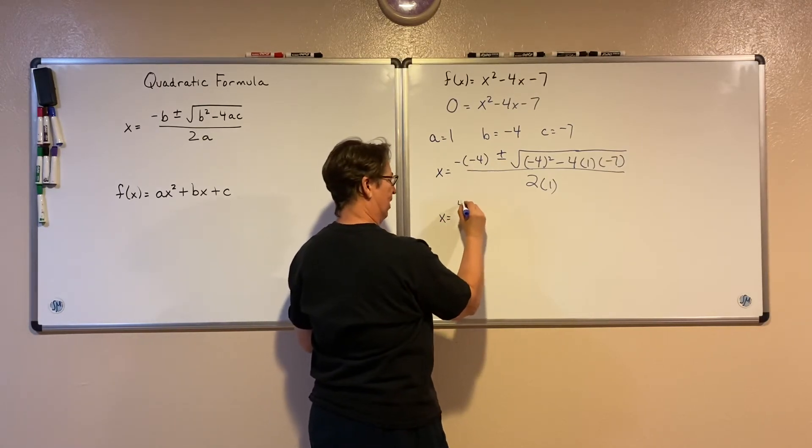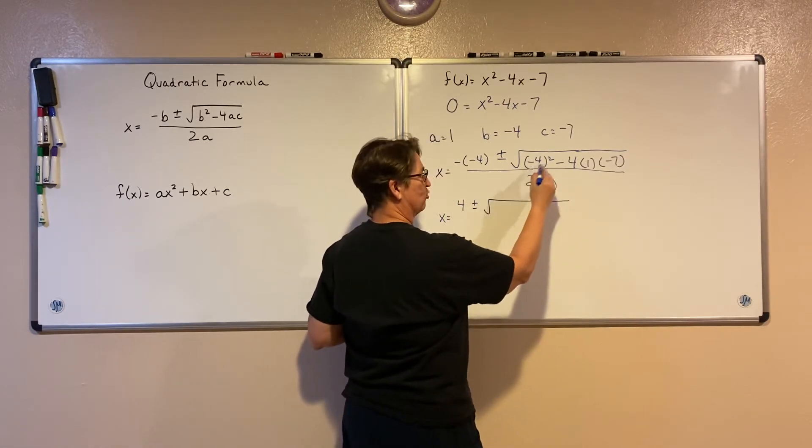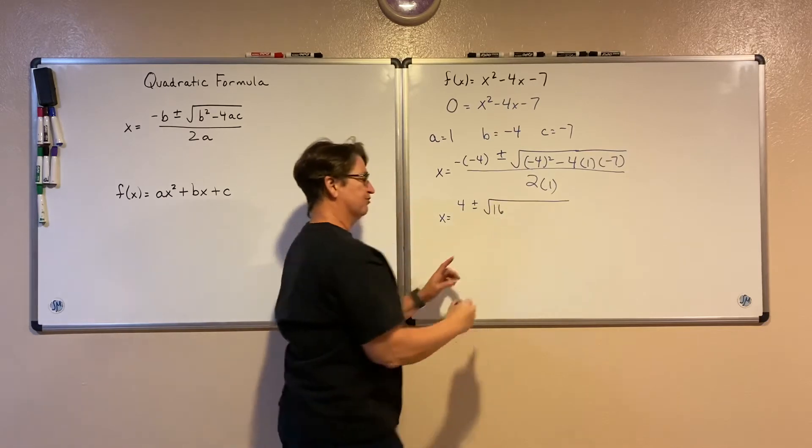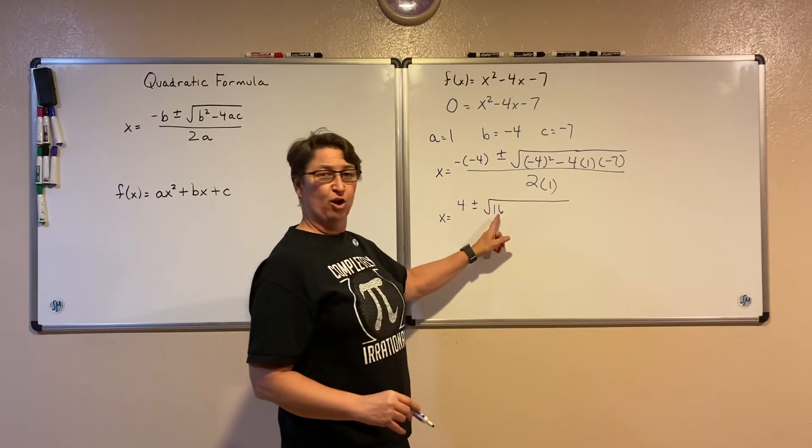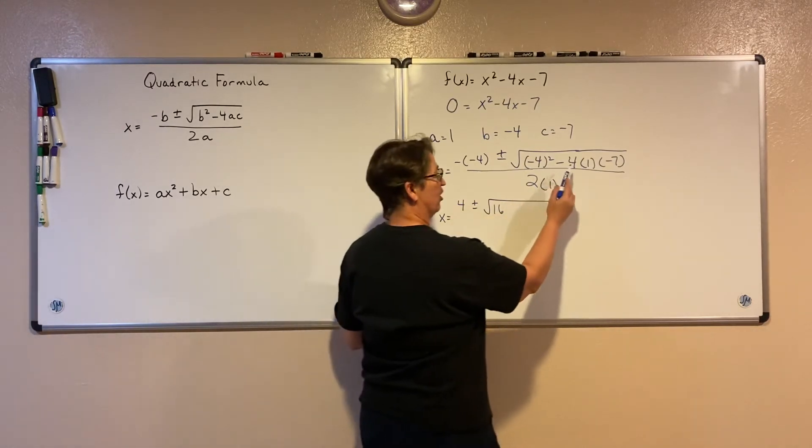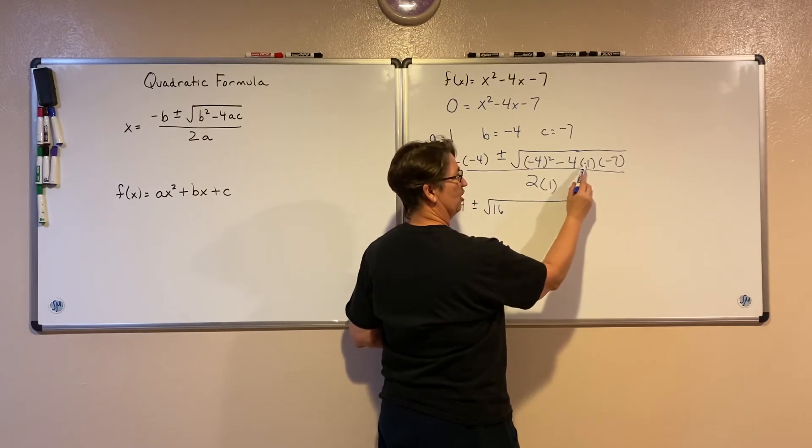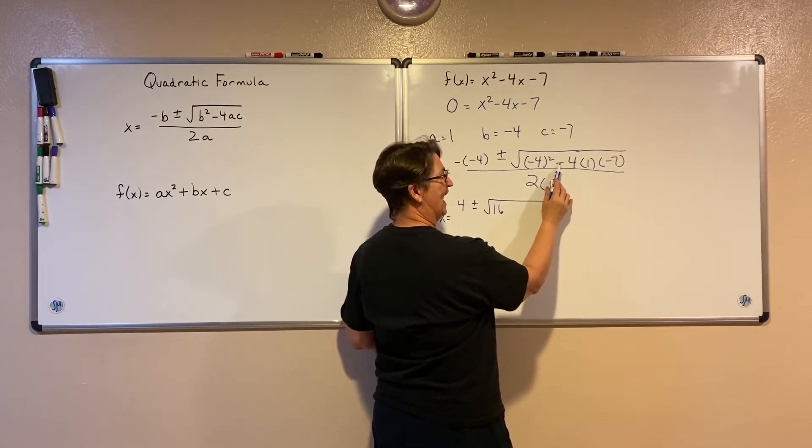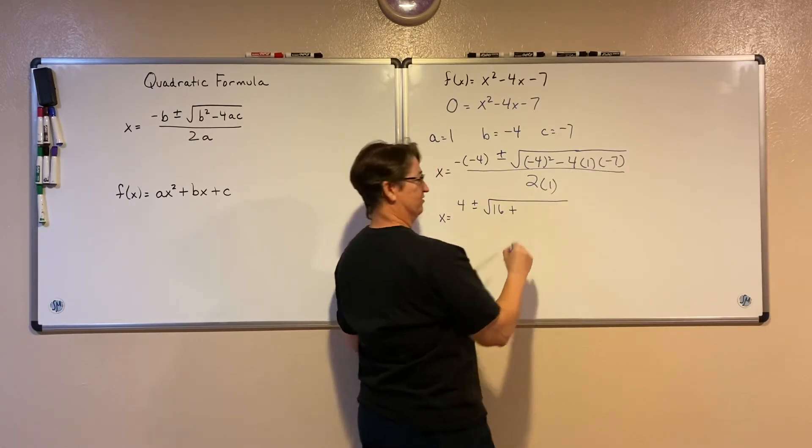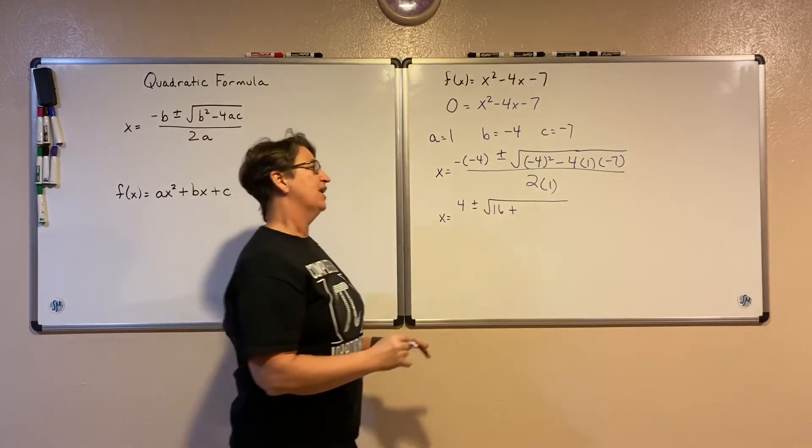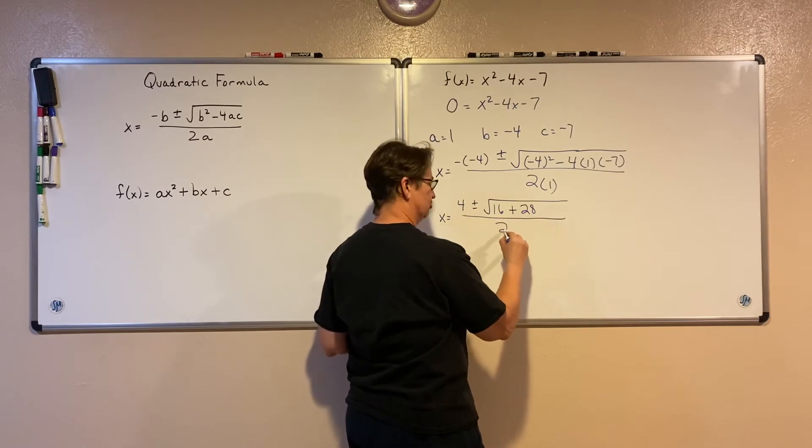A negative and a negative makes that a positive. Underneath the radical, a negative 4 squared is 16. This first number will always be positive because we're going to be squaring the number, so it will always turn out positive. Here though, the sign is going to be different depending on what the signs are of your a and c. Here I have a negative 4 times a negative 7, so it's going to be a positive number. And then I have 4 times 7 is 28. All over 2 times 1 is 2.